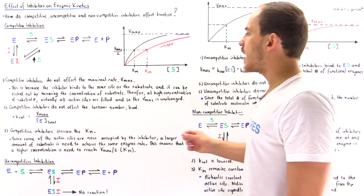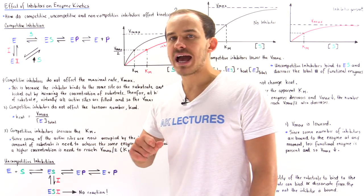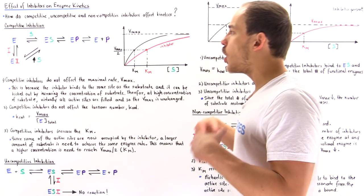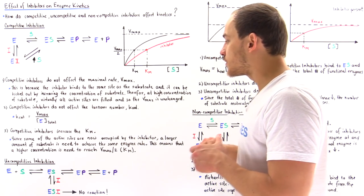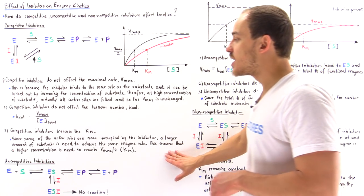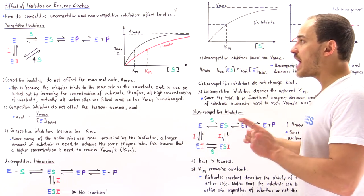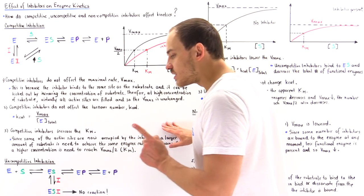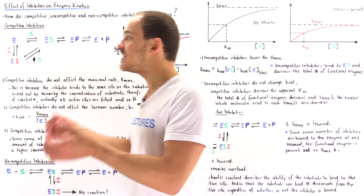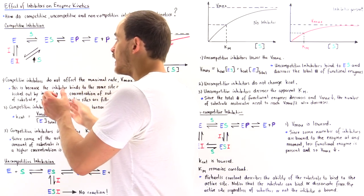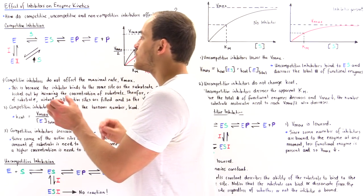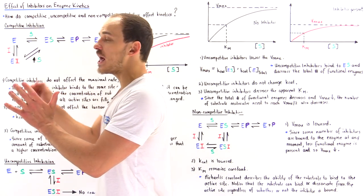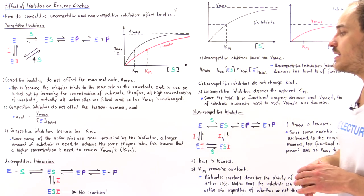So competitive inhibitors increase the apparent KM value. Since most of the active sites are occupied by the inhibitor, a larger amount of substrate is needed to overcome and displace that inhibitor to reach the same enzyme rate. This means a higher concentration of substrate is needed to reach Vmax divided by 2. Because KM increases, the affinity of the substrate for the active site decreases — now the inhibitor has higher affinity for that active site, so more substrate molecules are needed to displace it.